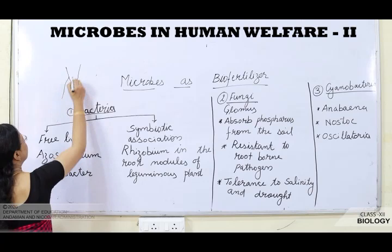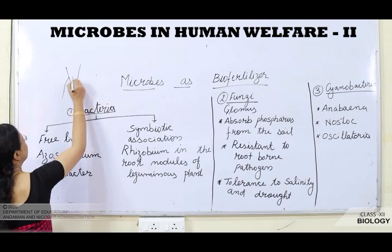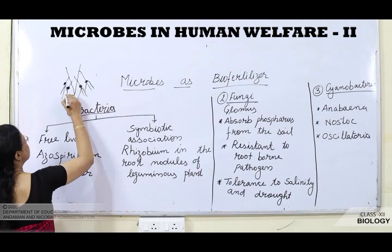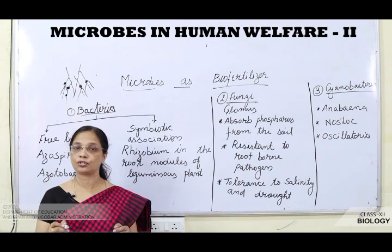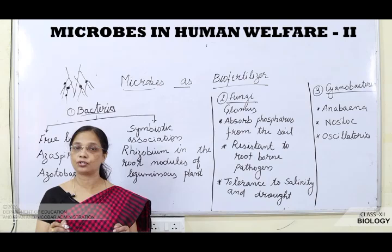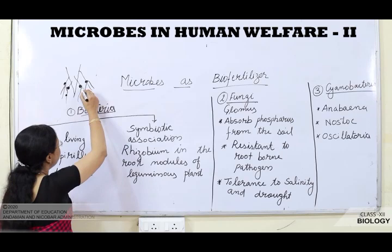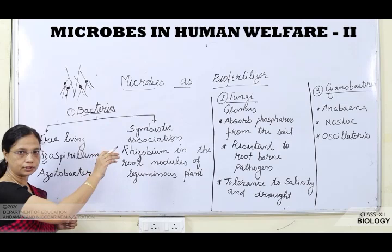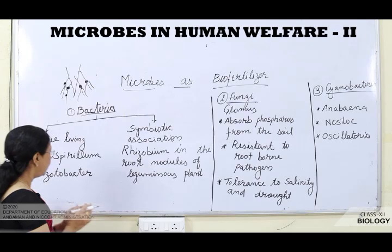In the root nodules of leguminous plants, Rhizobium bacteria live and fix atmospheric nitrogen. This nitrogen is provided to the plant, and in return, the Rhizobium bacteria get shelter and nutrition from the plant. This is known as symbiotic association.